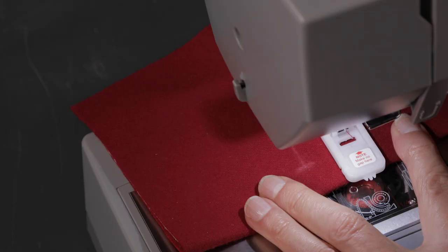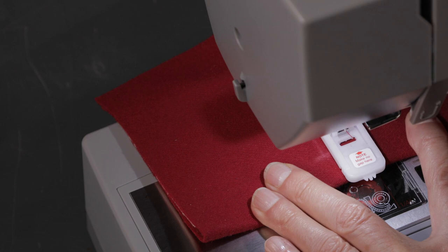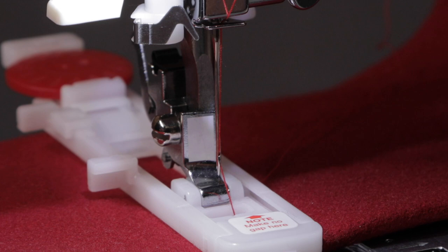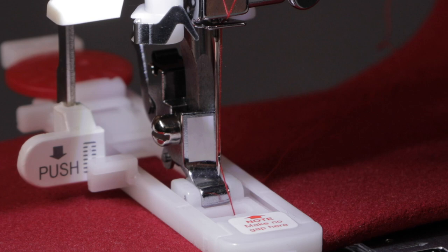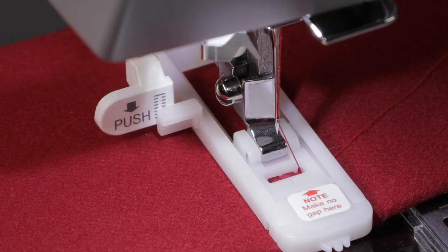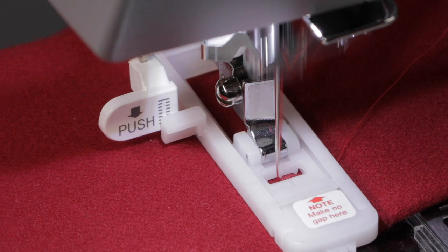Next we're going to place our fabric lining it up with the marking that we drew on the fabric. So we want the sideways line to line up with the hole in the buttonhole foot. Lower the presser foot lifter then bring down your buttonhole lever. Make sure it's pressed all the way down and we're ready to start sewing.